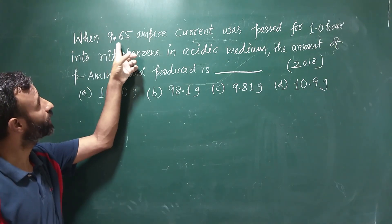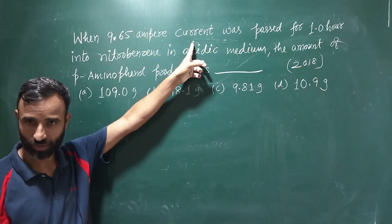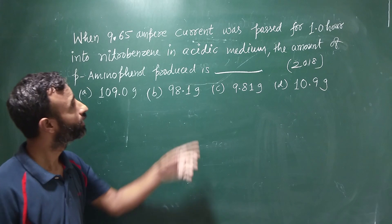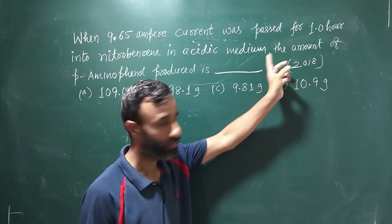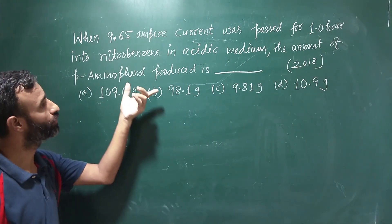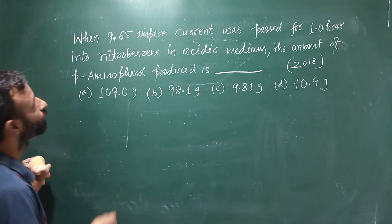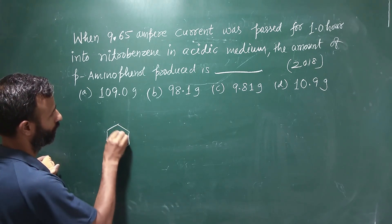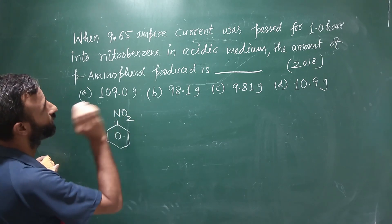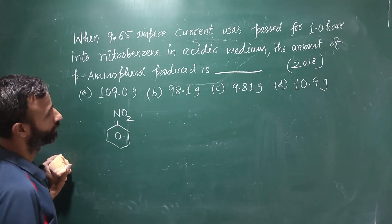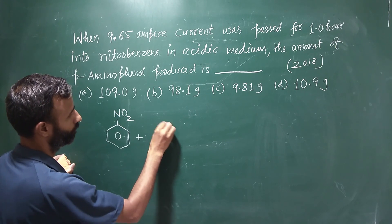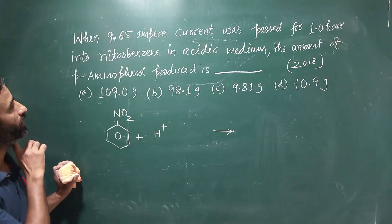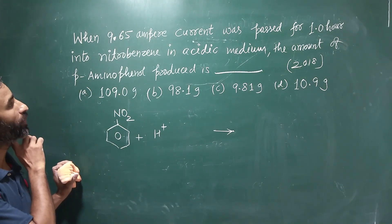When 9.65 ampere current was passed for 1 hour into nitrobenzene in acidic medium, what is the amount of para-aminophenol produced? Nitrobenzene in acidic medium gives para-aminophenol.